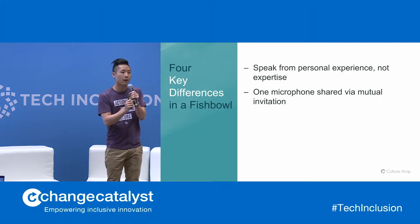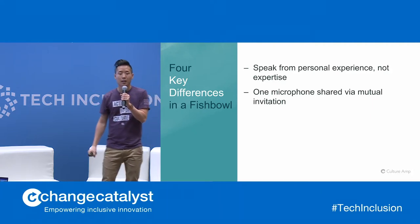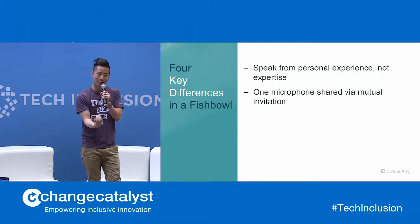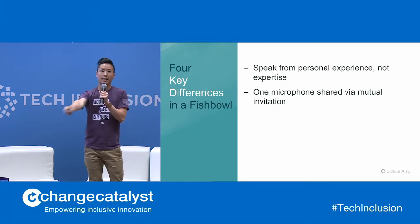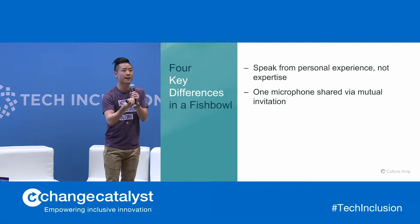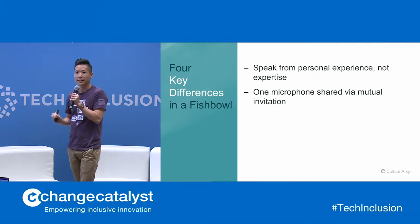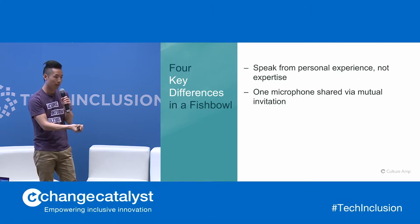The other microphone is passed from speaker to speaker in a concept called mutual invitation. So if Jessie were to speak and share her experiences on a fishbowl, when she's done speaking, she's going to pass the microphone to someone in the circle. And that person can decide to accept and speak, or they can decide to pass. The concept of mutual invitation is akin to giving consent in a conversation in what is often a difficult and sensitive topic.